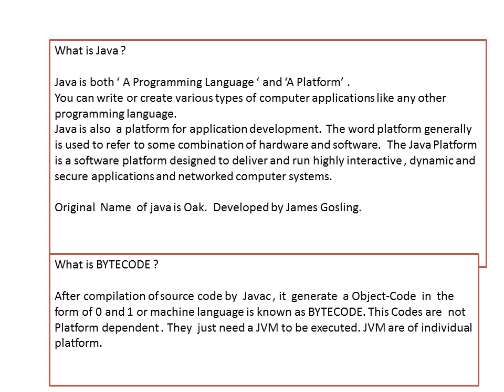JVMs are for individual platforms — for Windows we have a different JVM, for Android we have a different JVM, for Unix we have a different JVM. That is the reason you might have seen that on your mobile, if Java is not enabled, it will ask you to enable Java. It is nothing but the JVM asking — java.exe is called JVM, and that needs to be active to execute different Java programs on the internet.